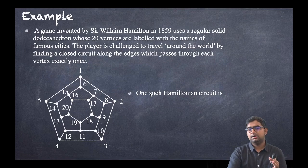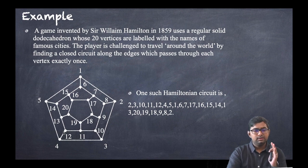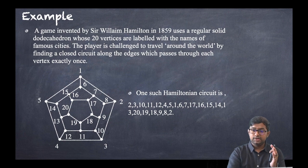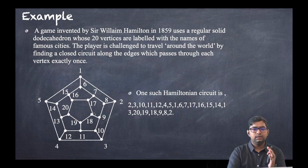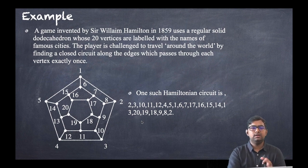One such Hamiltonian circuit starts from vertex 2, then goes to 3, 11, 12, back, then 4, 5, 1, 6, 7, 17, 16, 15, 14, 13, 20, 19, 18, 9, 8, and back to 2. This is one valid Hamiltonian circuit — there can be different circuits as well.